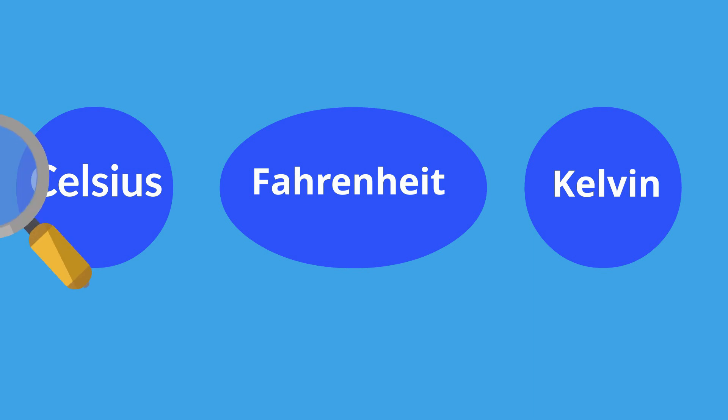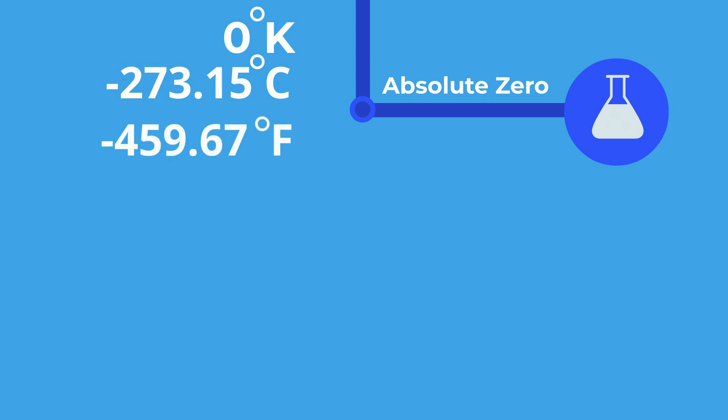Let's take a look at some temperatures in all three degrees. Let's start at absolute zero where matter does not move. It is zero degrees Kelvin, negative 273.15 degrees Celsius, and negative 459.67 Fahrenheit.